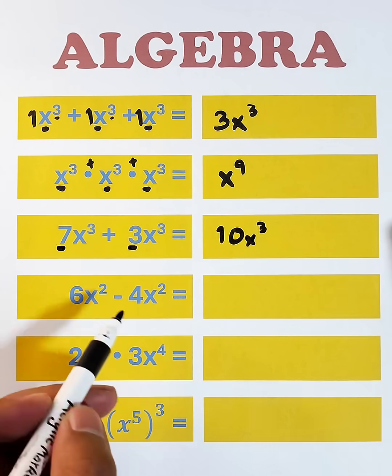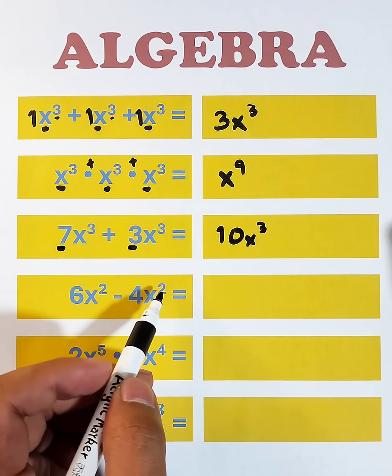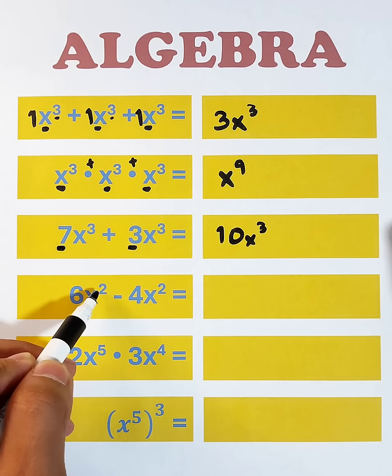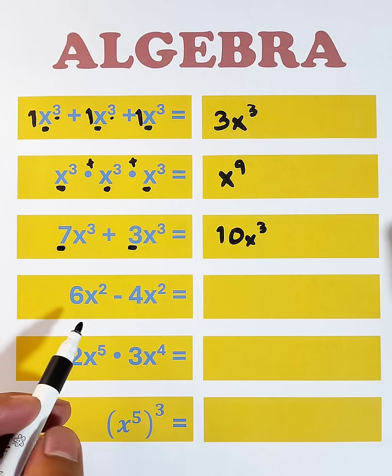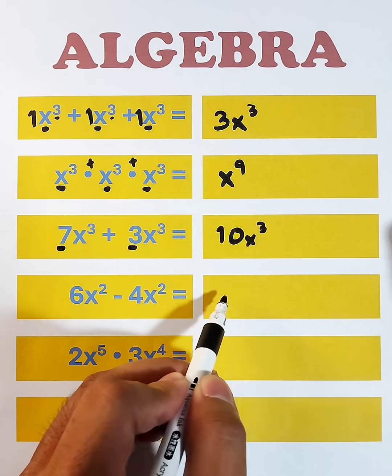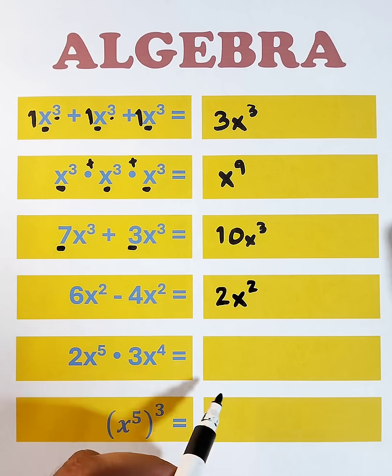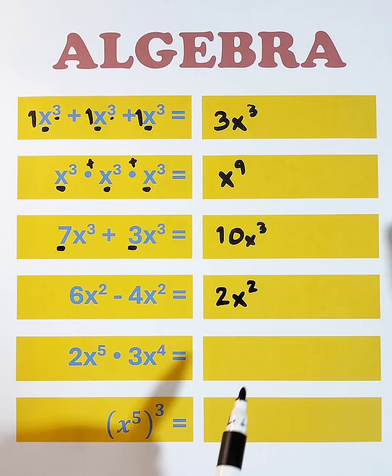Next, we have 6x squared minus 4x squared. As you can see, we have the same variable and the same exponent, so we can perform subtraction. 6 minus 4, that is equal to 2, then copy the variable and the same exponent, square. So the answer is 2x squared.